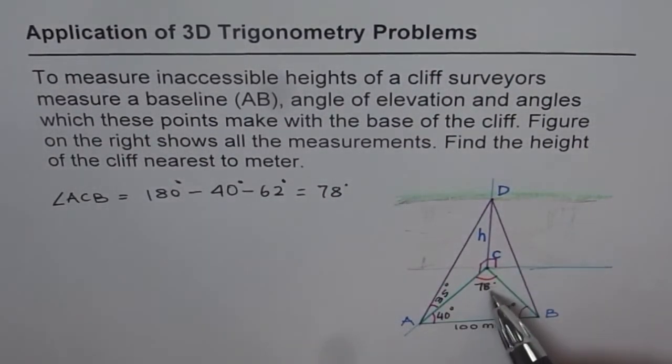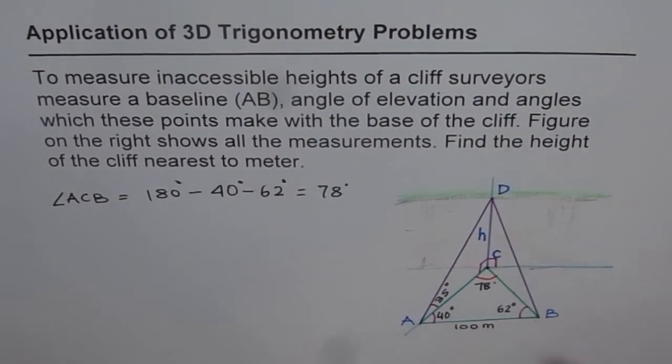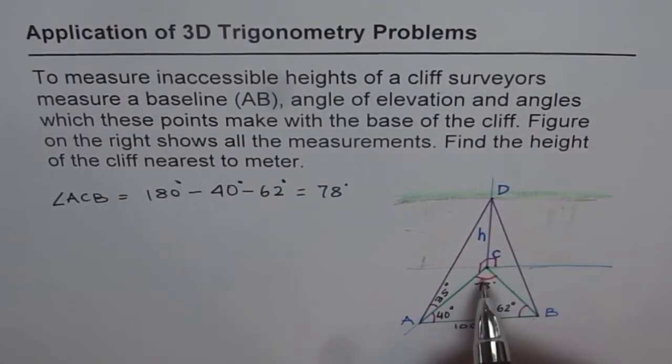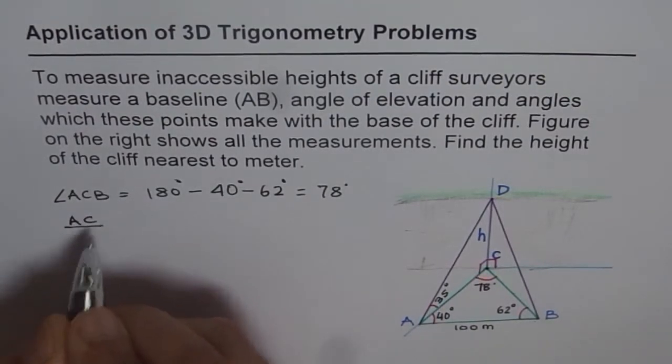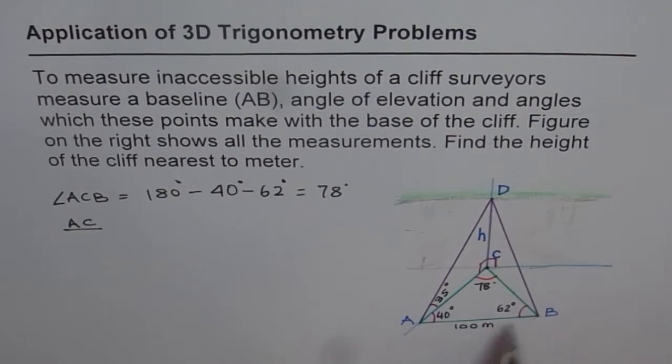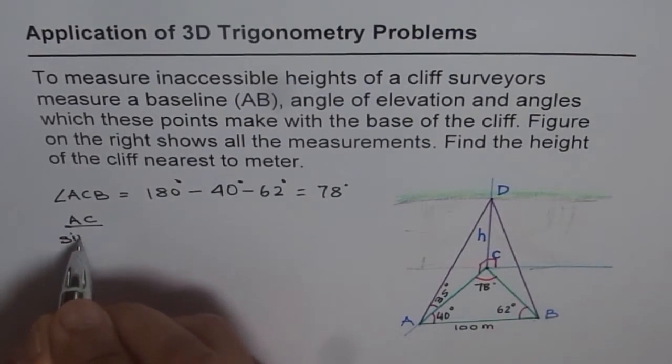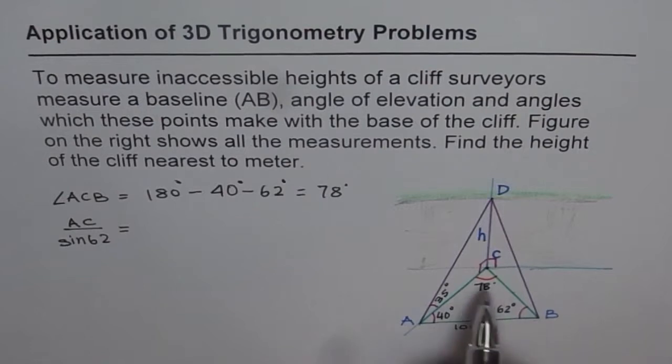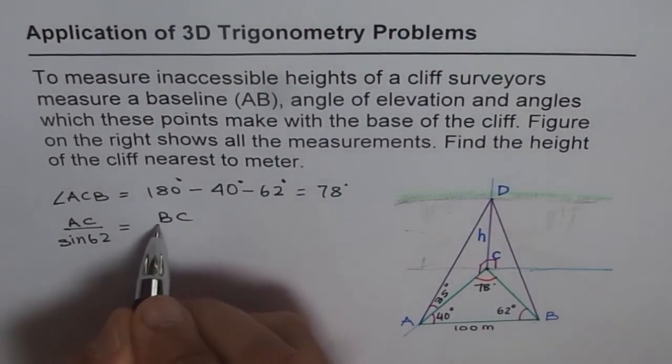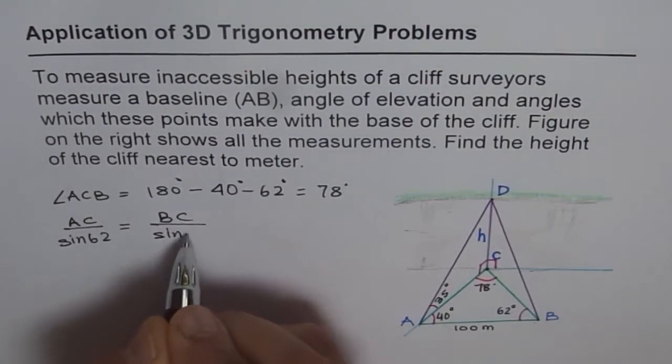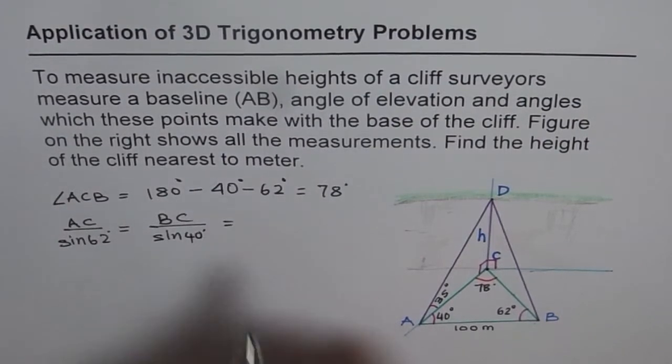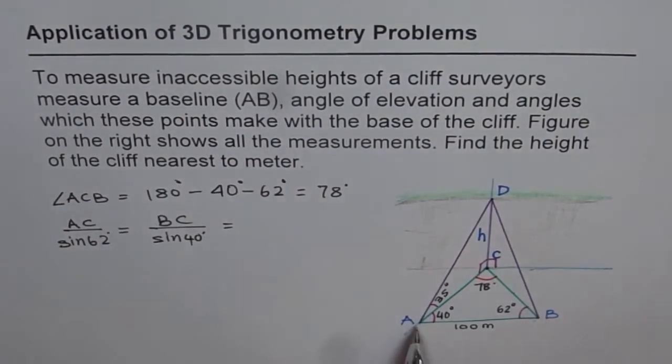Now we know one ratio, which is angle and side. Now with that, we can find both the sides. So what is the relation? Since we need to find the sides, let's write these sides as AC over angle opposite to AC, which is 62.